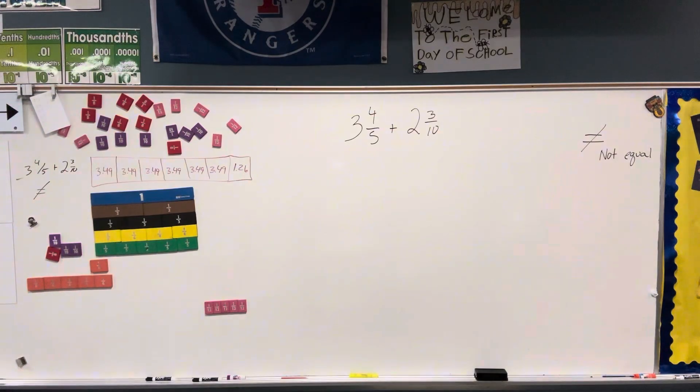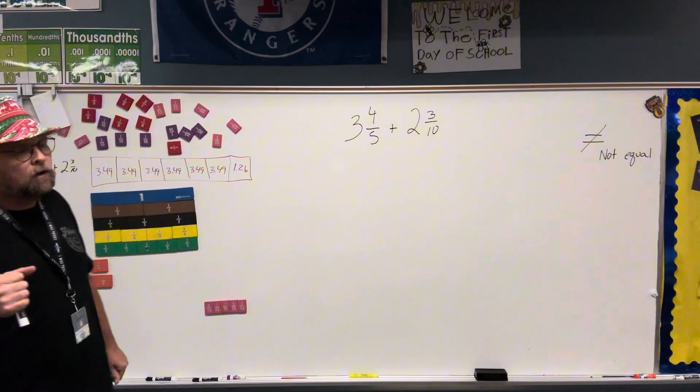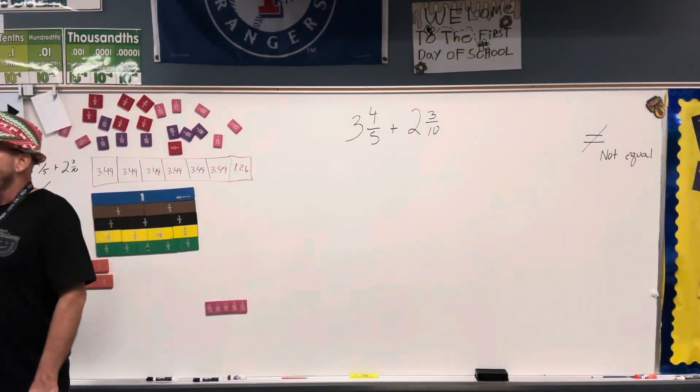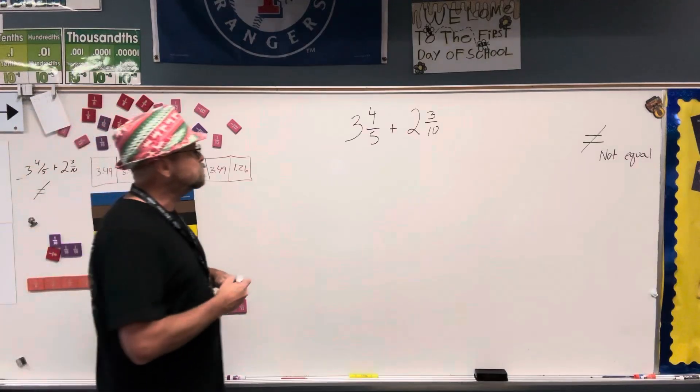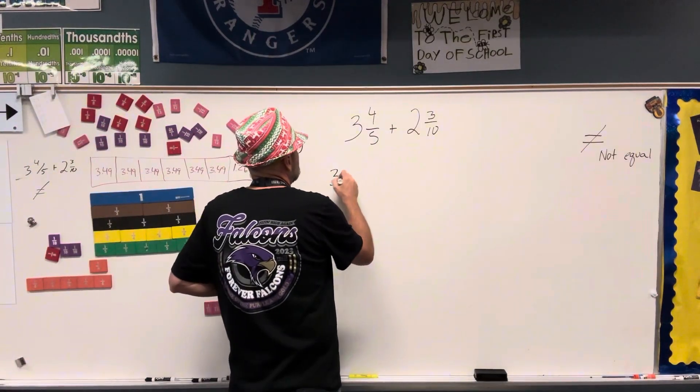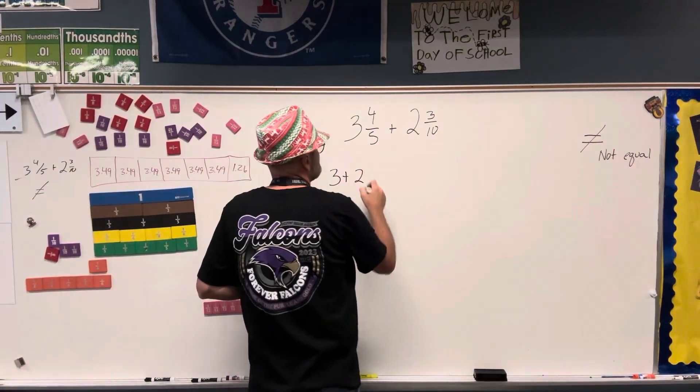You have a problem where you have to add 3 and 4 fifths plus 2 and 1 third. I'm going to do a little decomposing when I do this. I'm going to start by taking away my whole numbers, 3 plus 2.